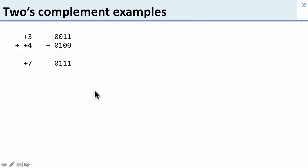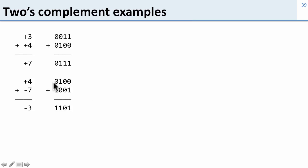Let's take a look at some more 2's complement examples. Here's just 3 plus 4. Note that the most significant bit, the sign bit, is 0 for both, which means they're both positive and the addition works the same way as it normally would. Here's 4 plus negative 7 — this one's negative, you can see because its most significant bit, or sign bit, is set. You add them up and you get negative 3: minus 8 plus 4 plus 1, which is minus 8 plus 5, which is minus 3.